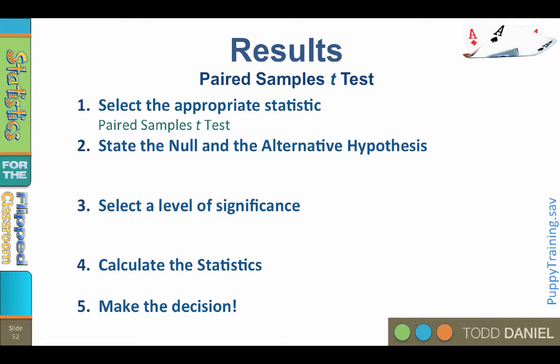Step two, state the null and alternative hypothesis. We want to know if the means of the two samples of puppies are different. We're not saying which group will be better, so this is a two-tailed test. Because this is a two-tailed test, our null hypothesis will be either mu1 equals mu2, or mu sub d equals 0. The mean difference equals 0. That means that our alternative hypothesis would be H sub 1 colon, mu1 does not equal mu2, or mu sub d does not equal 0.